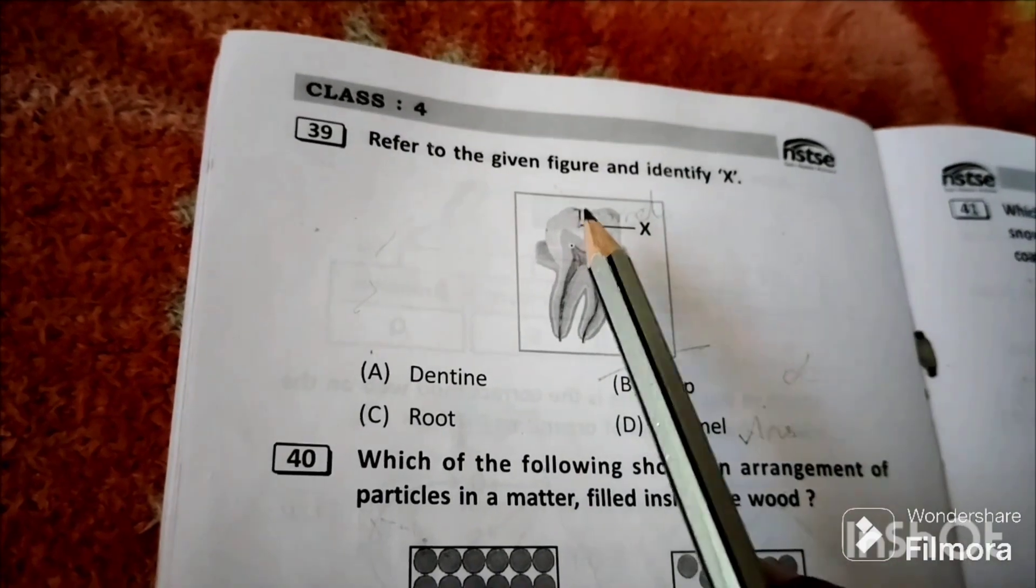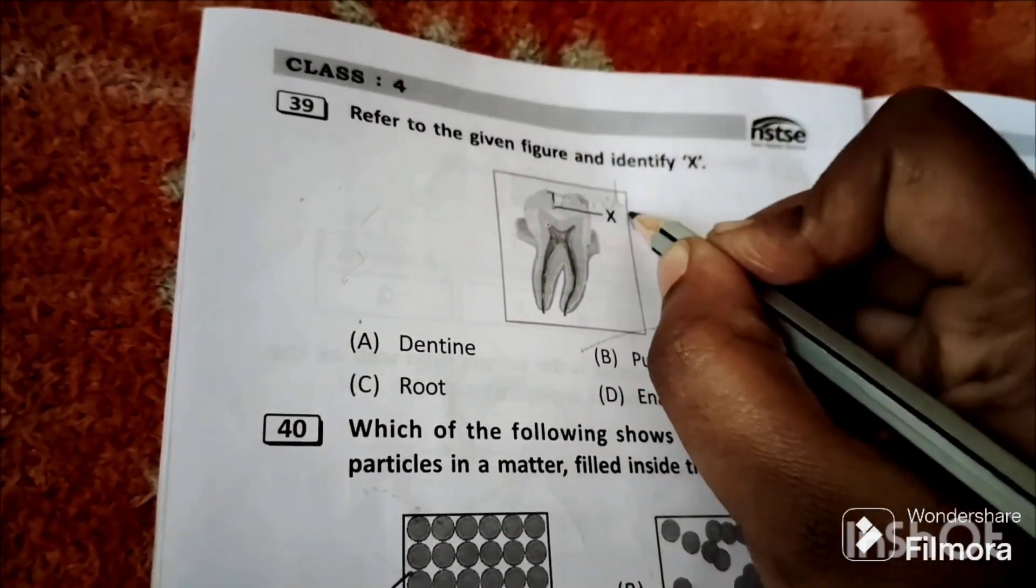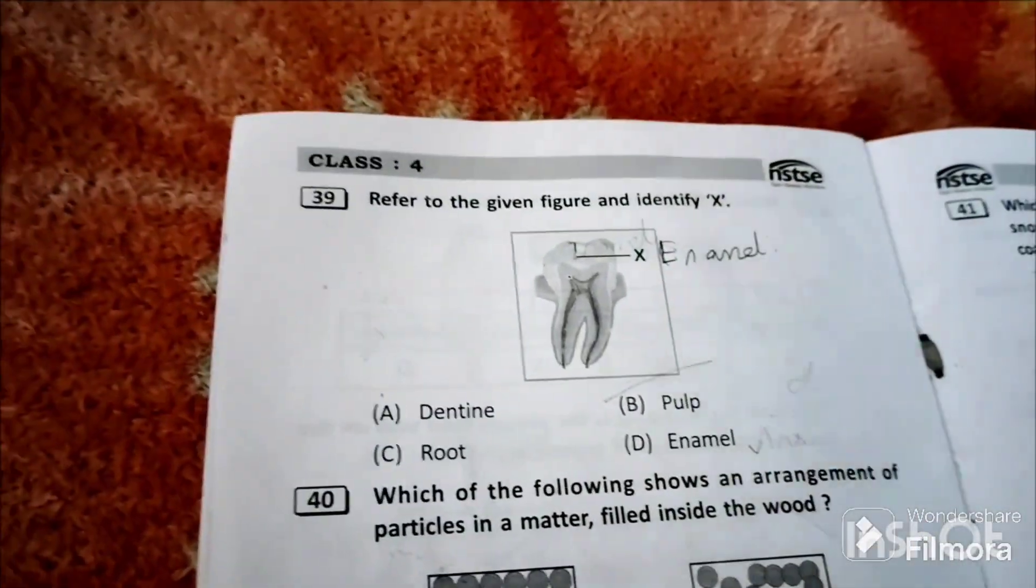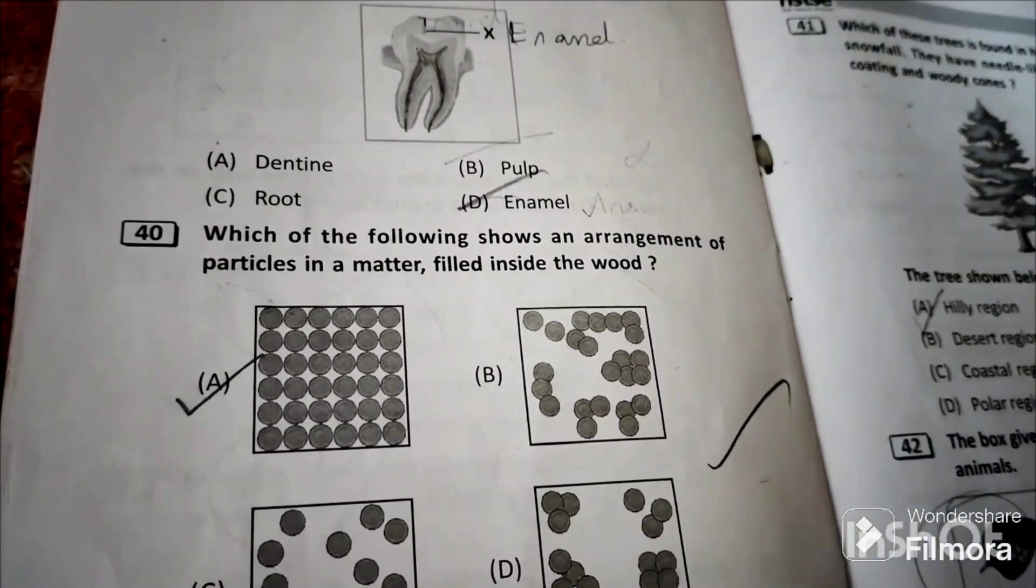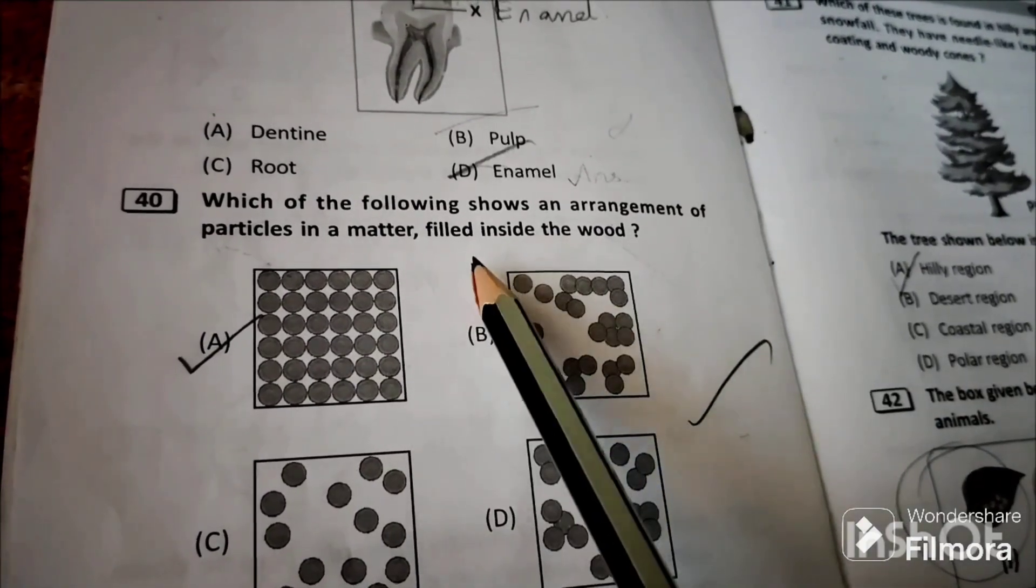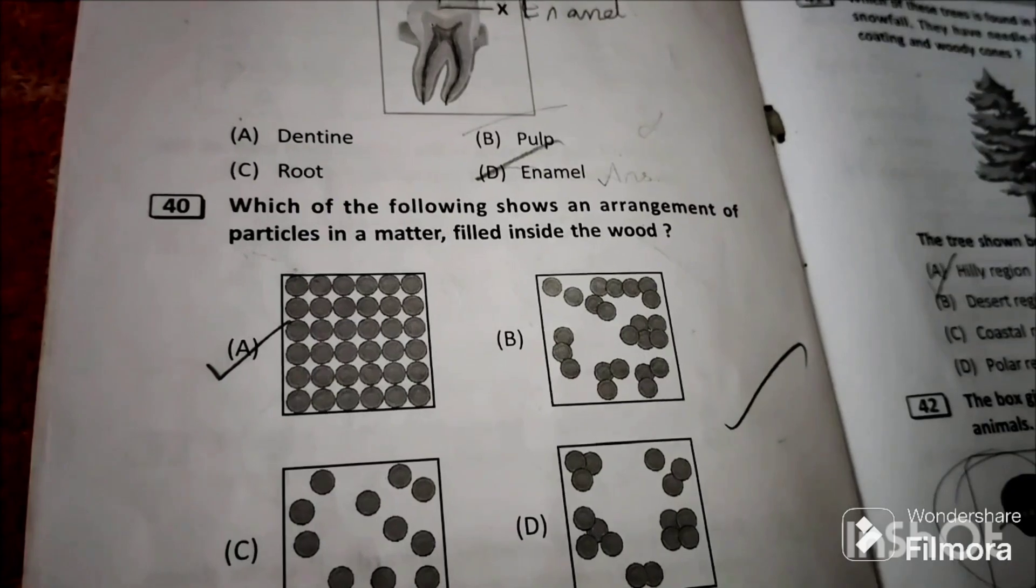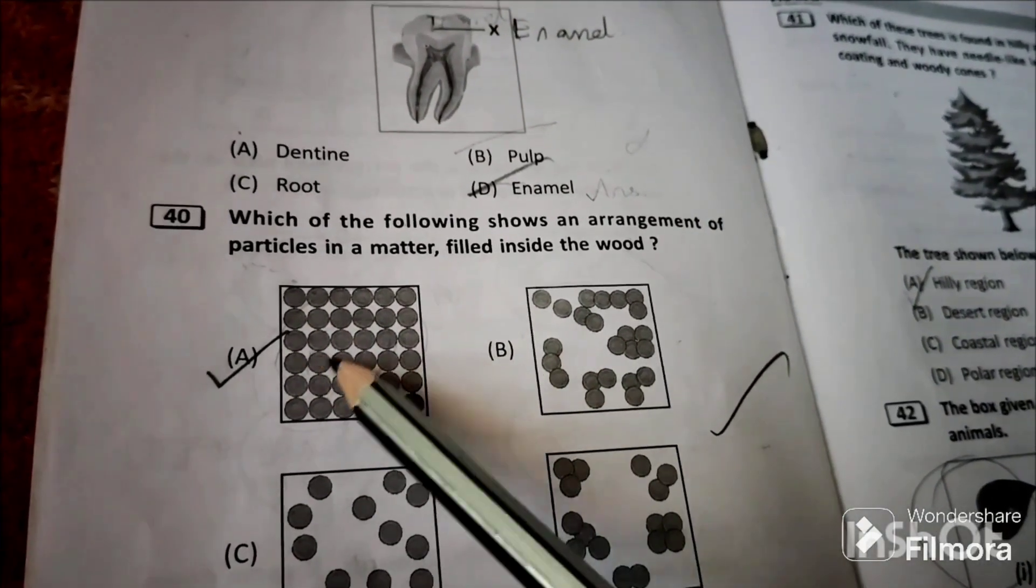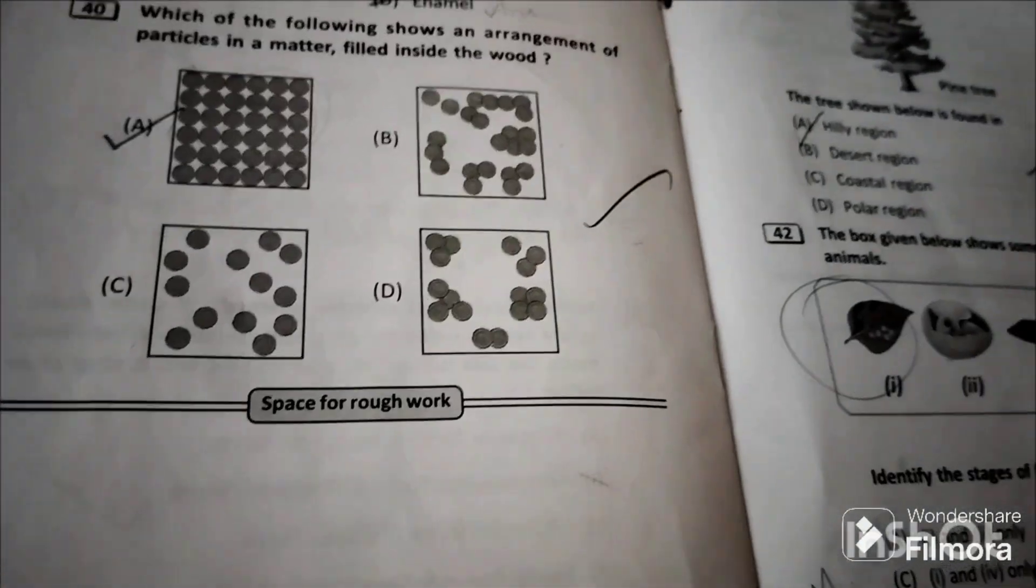Refer to the given figure and identify X. This part X is enamel of the teeth. So option D, enamel is the answer. Question 40: Which of the following shows an arrangement of particles in a matter filled inside the wood? Wood is a solid. In solid, molecules are closely and tightly packed. So in option A, molecules are closely packed and tightly packed. Option A is the answer.